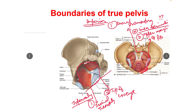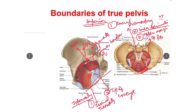इसके बाद हम देखेंगे lateral में कौन-कौन से borders आते हैं true pelvis में। Lateral border बनाने में आता है: greater sciatic notch, lesser sciatic notch, ligaments, और inner borders of ischium. यह चारों मिलकर बनाते हैं true pelvis का lateral border.